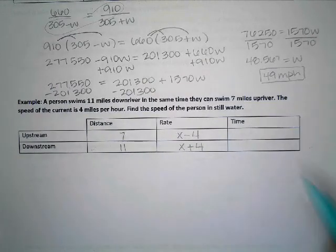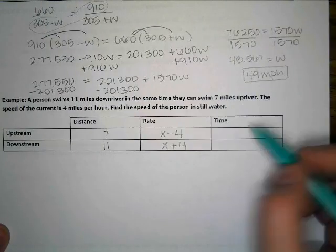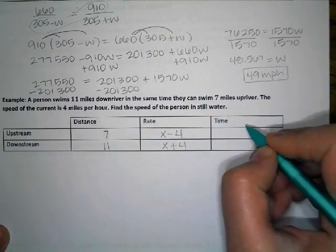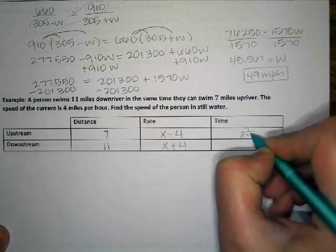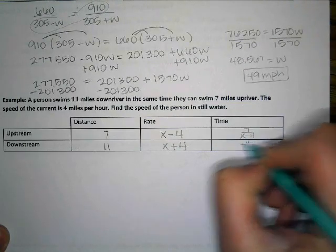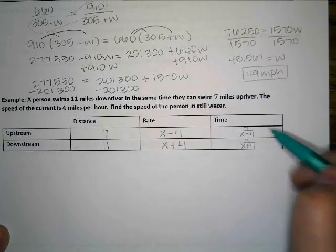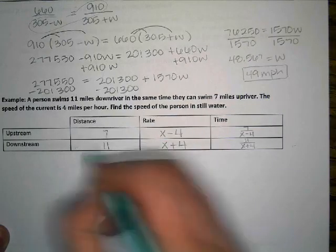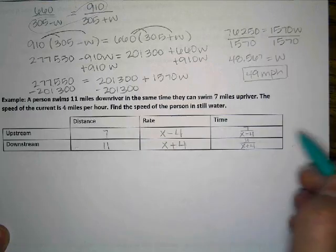Distance equals rate times time, multiplied by time. So time is distance divided by rate. So distance divided by rate. Distance divided by rate. It says that these two things happen in the same time frame. And so, not that they happened at the same time, but that they would happen in the same amount of time. So I'm going to set them equal to each other.